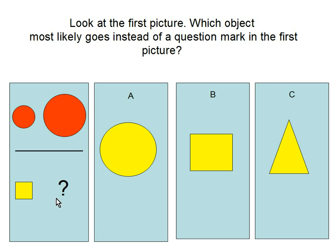The first picture shows a little circle and a big circle. And the second is a small square. So the answer is B because there should be a bigger image of the same shape.